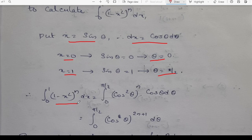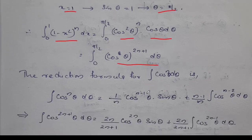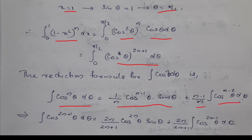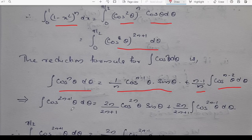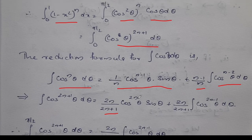So our given integral is integral from 0 to 1 of 1 minus x squared whole raised to n dx, equal to integral from 0 to pi by 2 of cos squared theta whole raised to n into cos theta d theta. So the integral of cos raised to 2n plus 1 theta d theta equals 2n by 2n plus 1 into integral of cos raised to 2n minus 1 theta d theta, using the reduction formula.